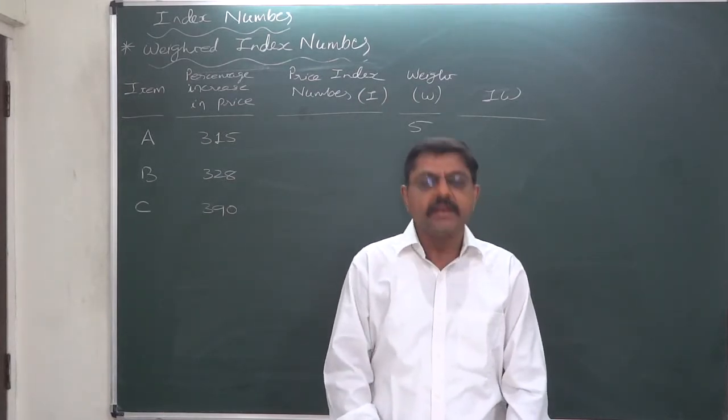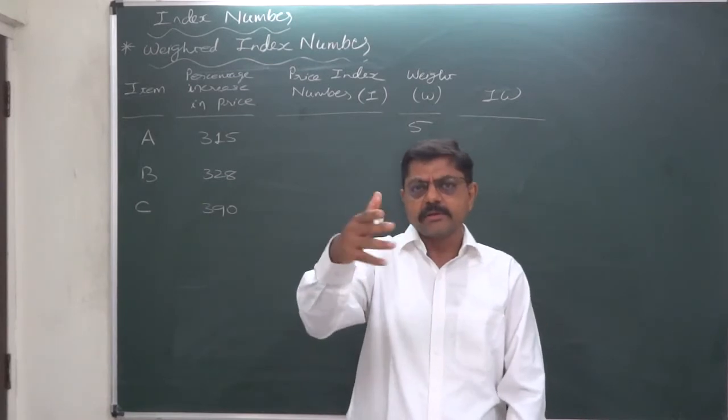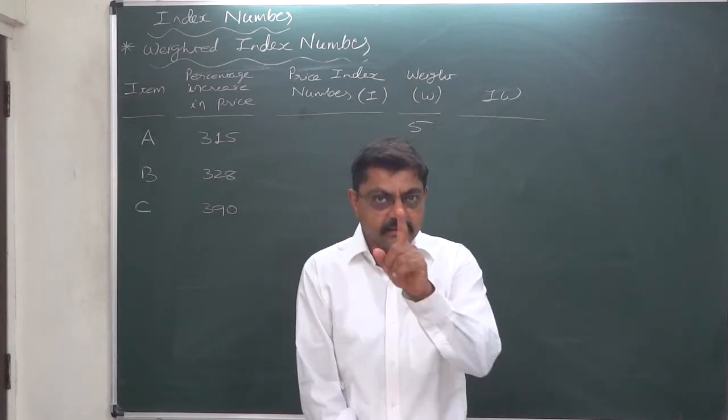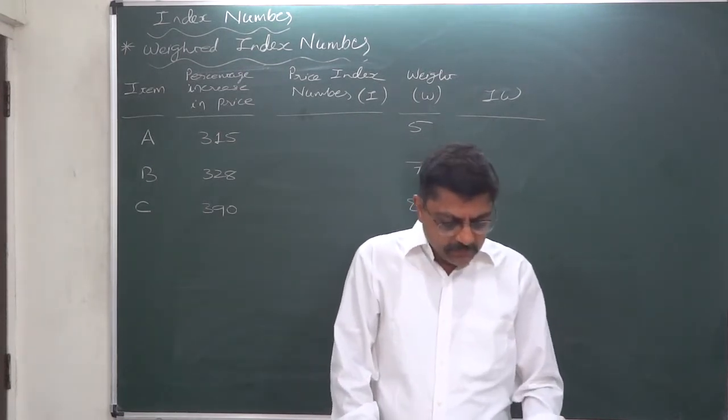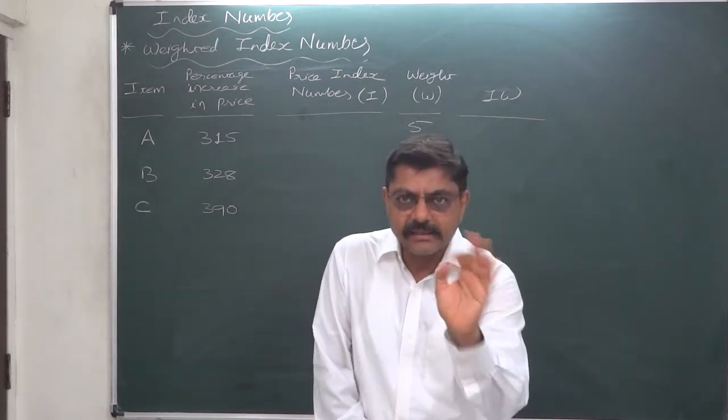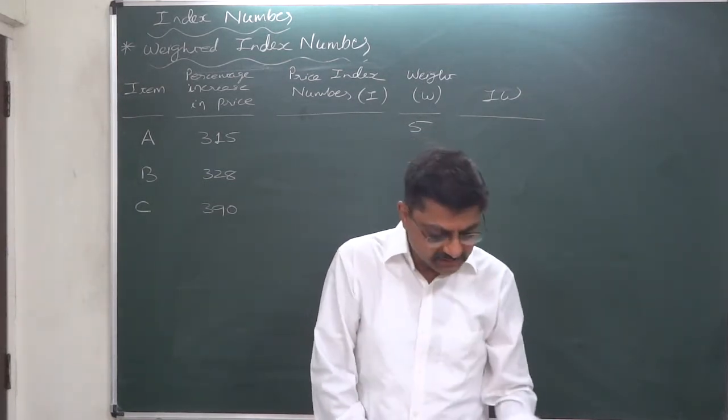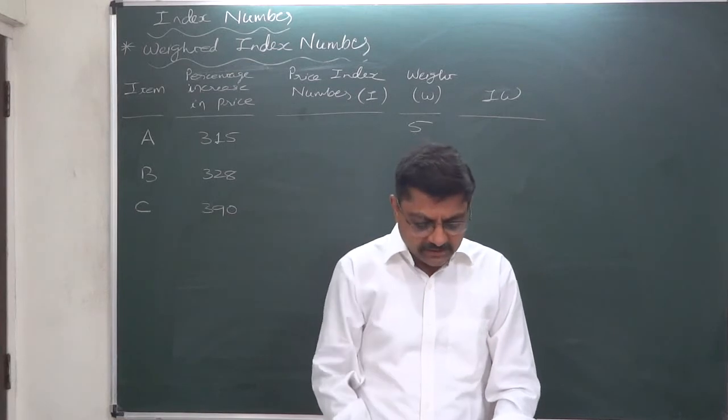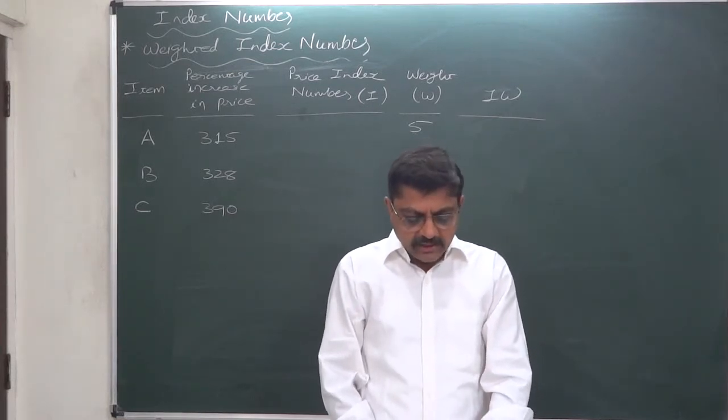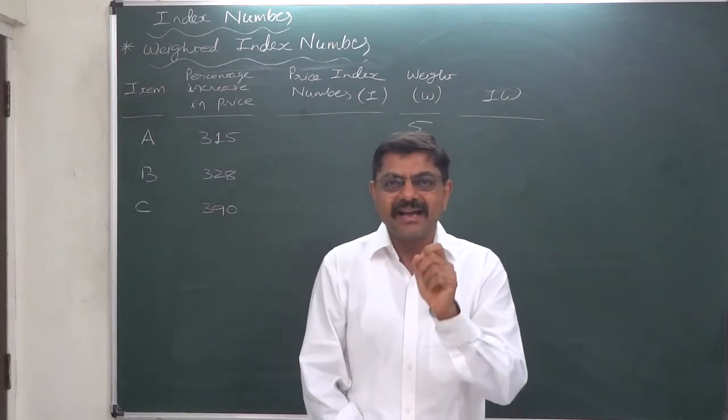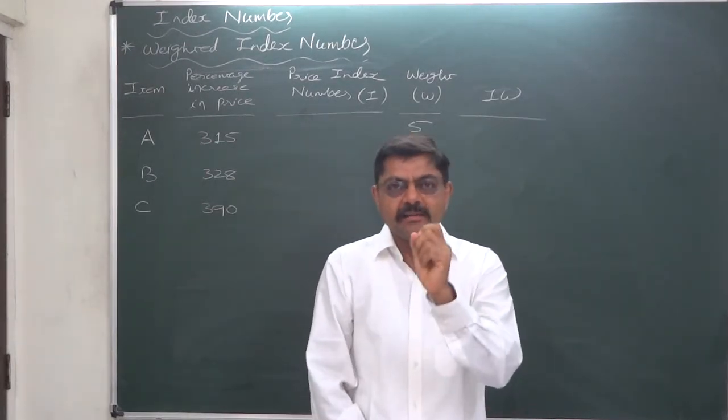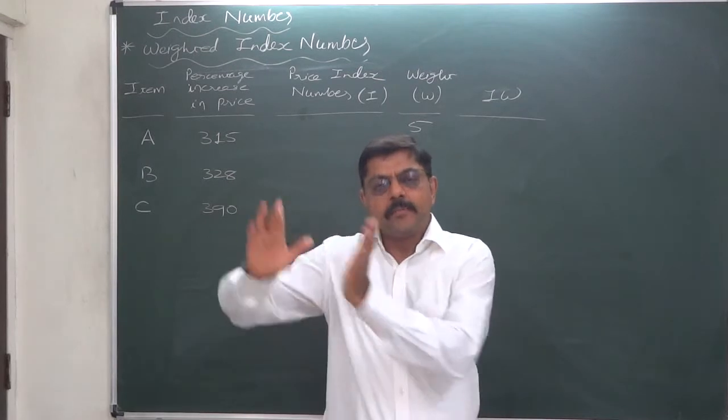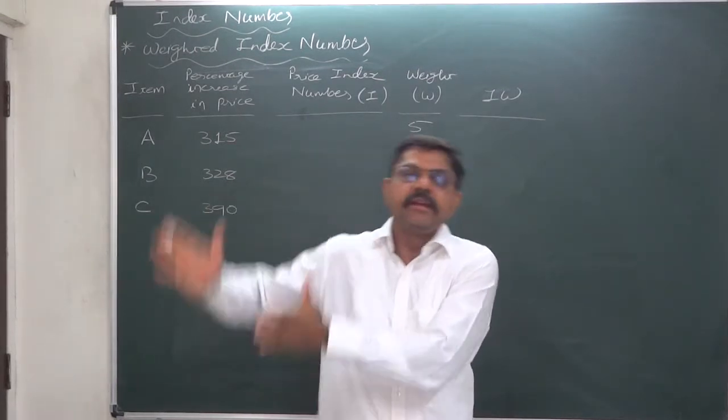What is the question? The percentage increase in the prices of three items—in the question paper the term was I think commodities—are 315, 328, and 390. Yes, I am repeating the sentence: the percentage increase in the prices of three items or commodities or things, whatever the case may be, are 315, 328, and 390 respectively. These are not price index numbers. These are percentage of increase in price. The prices which were in the base year have increased by this much percentages respectively.